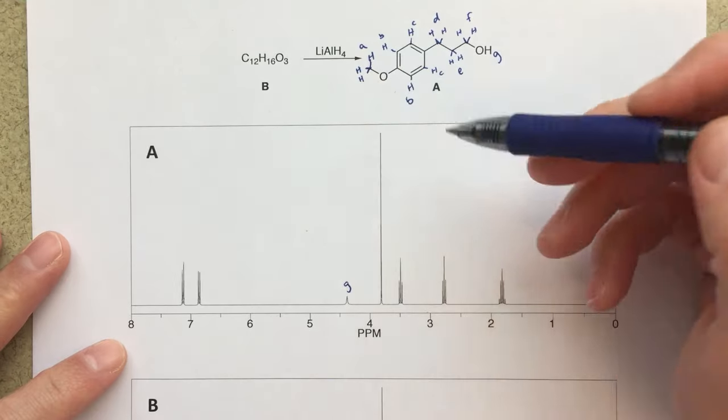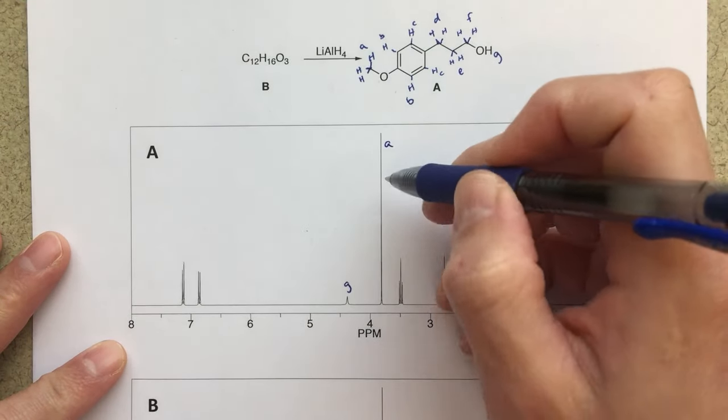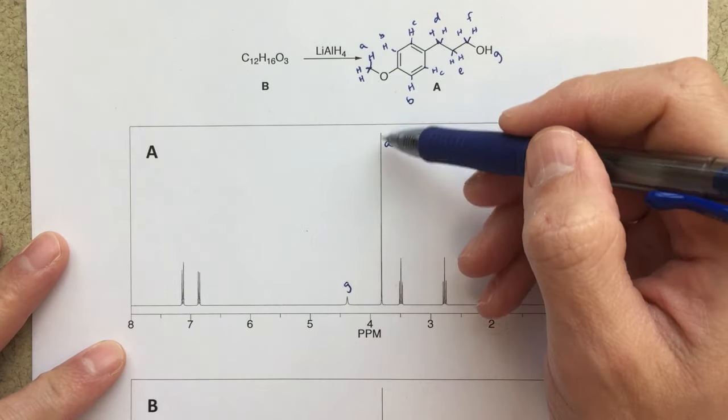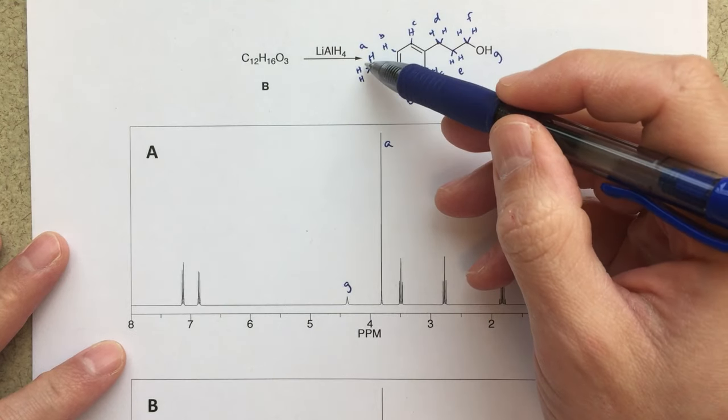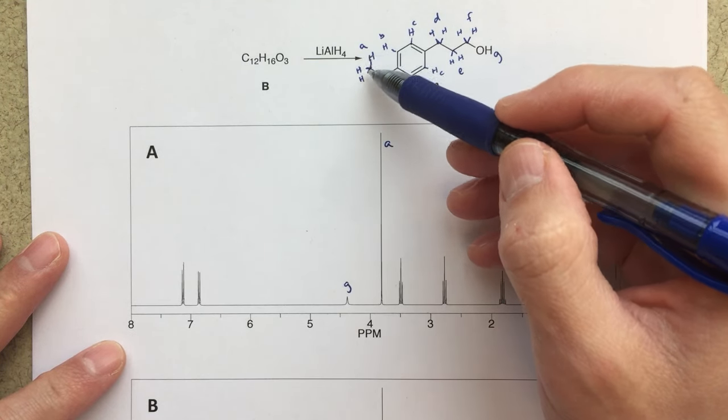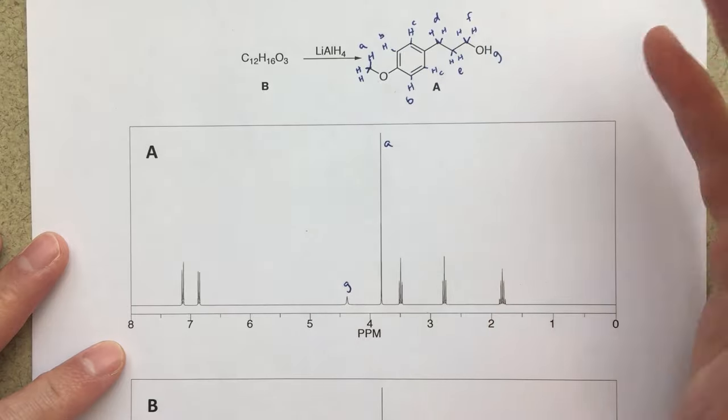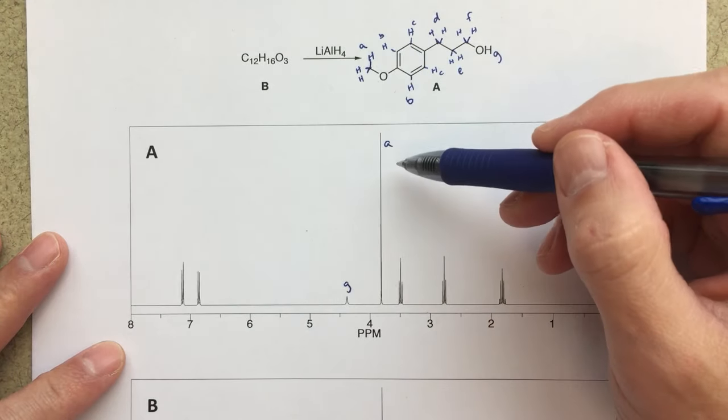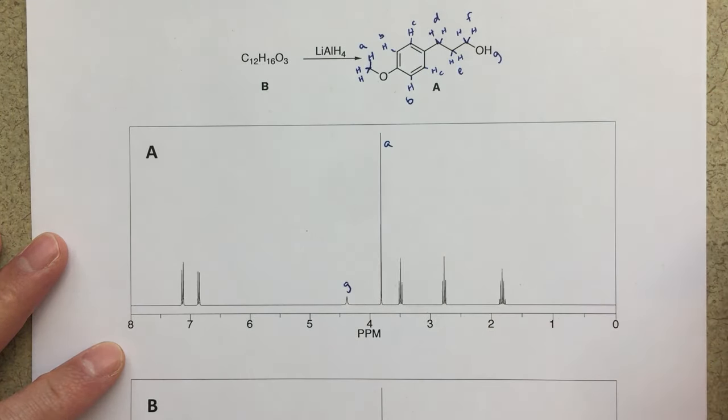Now our peak for A, I think it's very clearly this peak here. This is going to be a three H singlet, and we've got this methyl group or methoxy group, and these are going to be isolated, right? There's going to be no splitting, and they're going to integrate to three, so pretty clearly that's this peak here.